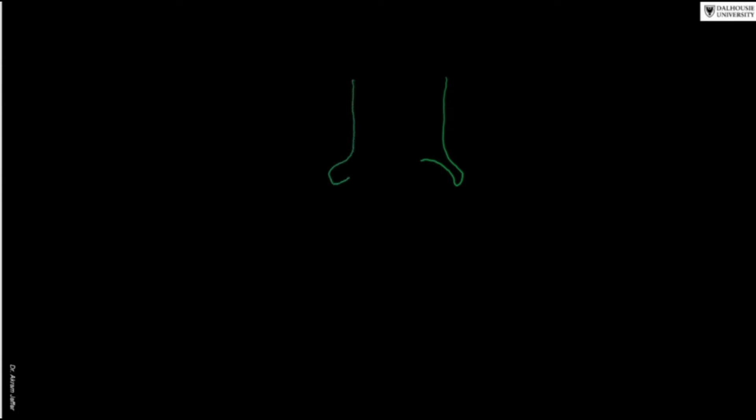Let me draw a diagram to show the medial pterygoid plate with the pterygoid hamulus. This is on one side and this is on the other side, as if we are looking at the medial pterygoid plate from behind. Anteriorly is the nasal septum, this is the vomer, that will be the palate, and below that the tongue. We are looking from behind forward.